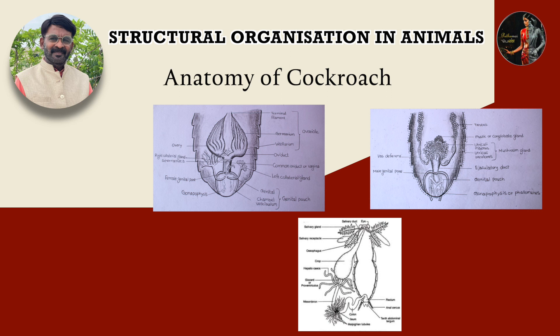The digestive system is important. The alimentary canal of the cockroach is 6 to 7 cm. It is divisible into the following three parts: one is foregut, two is midgut, three is hindgut. Foregut, midgut, and hindgut.